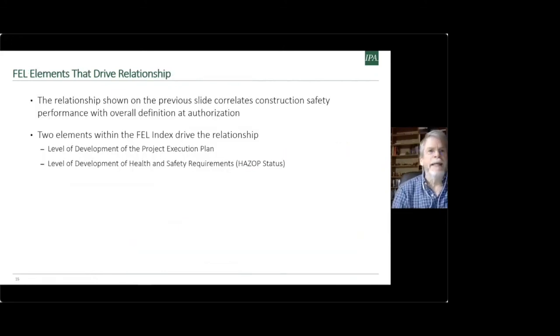Now, when I look at the data in more detail, I can see even in more granular because the relationship that I showed on the previous slide correlates overall construction safety performance with that overall definition and authorization in that single metric, that FEL loading index. But there are two particular elements within the FEL index that is the main driver of this relationship. When you break it down statistically or do some sort of more detailed statistical analysis of the elements of front-end loading, the level of development of the project execution plan, which you may recall are things around the level of definition of the schedule, how well and defined is your contract strategy, your turnover sequencing, your commissioning and startup plan, your design plan, how well are those comprehensive plans and detailed schedules developed as we get to authorization is one of the strong leading indicators of ultimately construction safety.